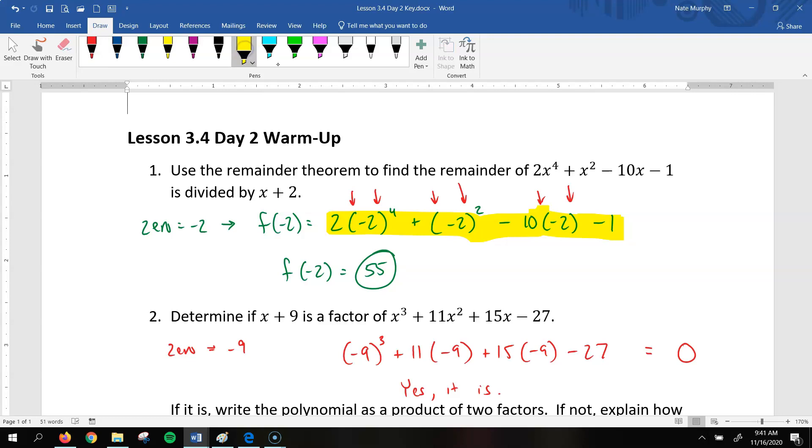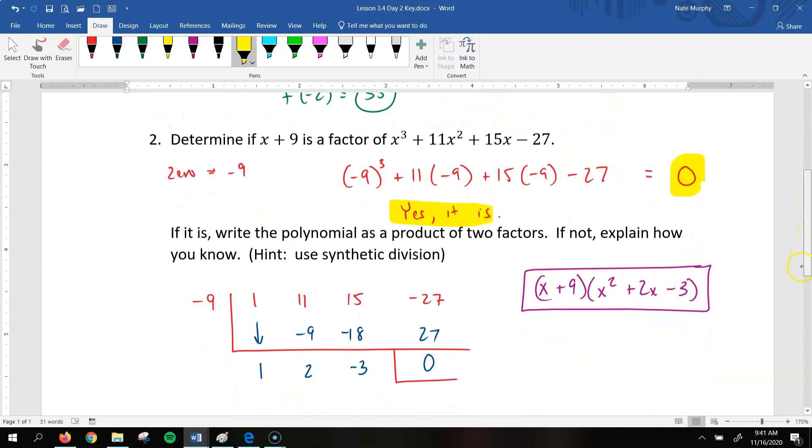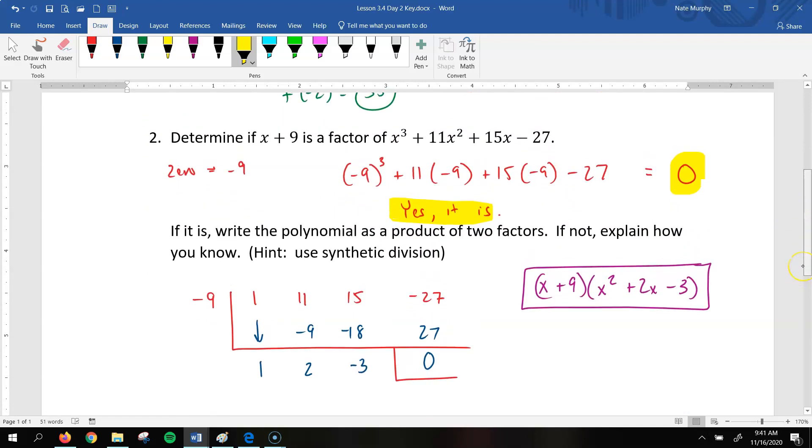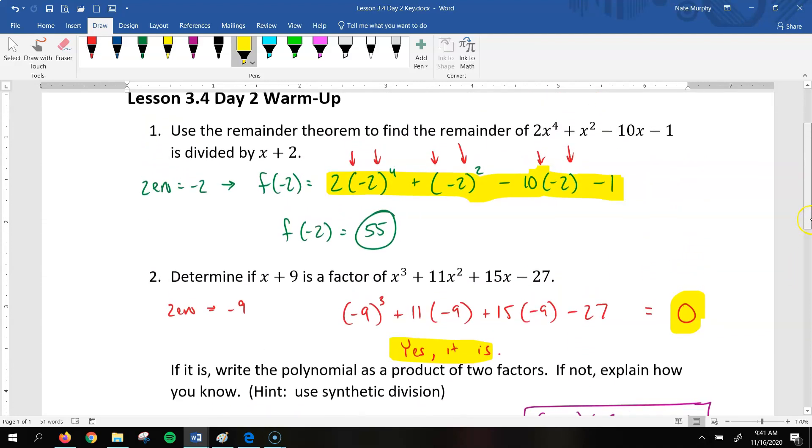If you do that correctly, we get 0 as our answer. And so since we get 0 as our answer, that means that it divides evenly. So it is a factor of that original polynomial. So now we're going to figure out, if it is, you're going to write this as a polynomial as a product of two factors. If not, explain how you know.